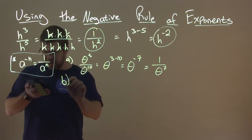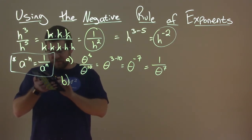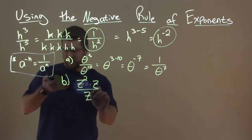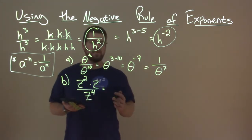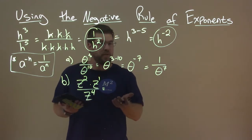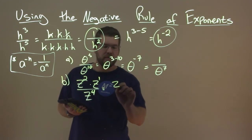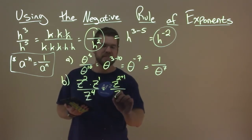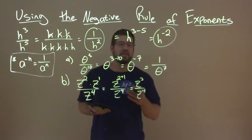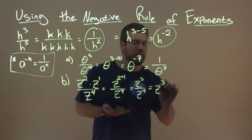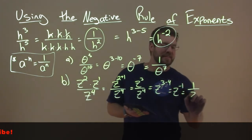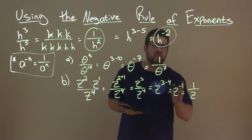Let's try Example B: z squared times z over z to the fourth power. That z by itself is really z to the first power. So we have z squared times z to the first — applying the product rule in the numerator, we add the exponents: z to the 2 plus 1 power over z to the fourth, giving z to the third over z to the fourth. Then the quotient rule: z to the 3 minus 4, which is z to the negative 1. The negative rule of exponents gives us 1 over z to the first, which we just write as 1 over z.